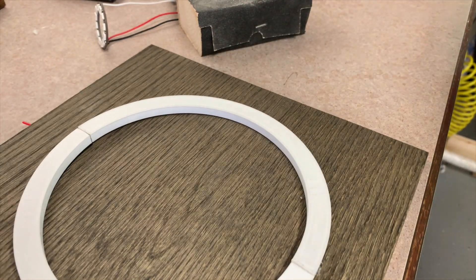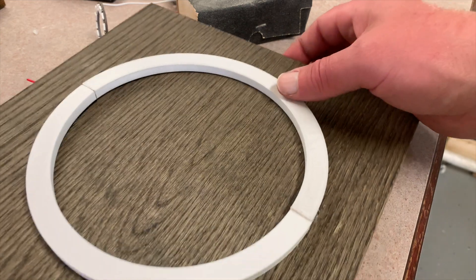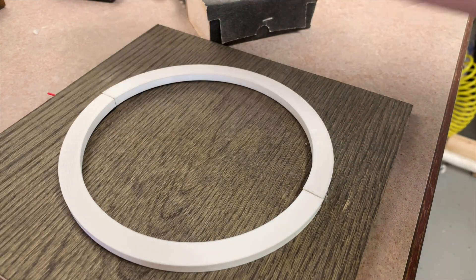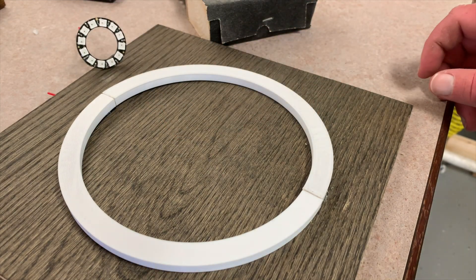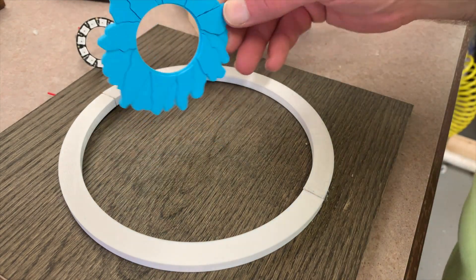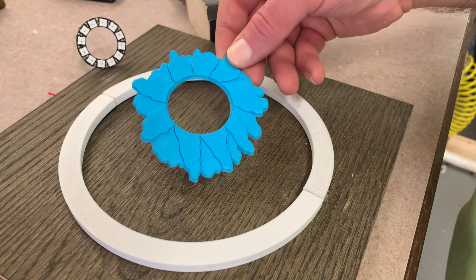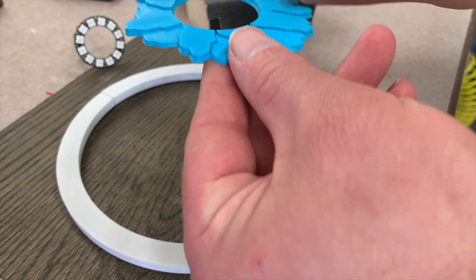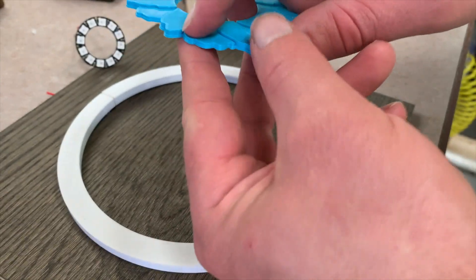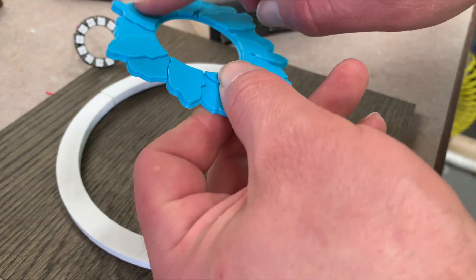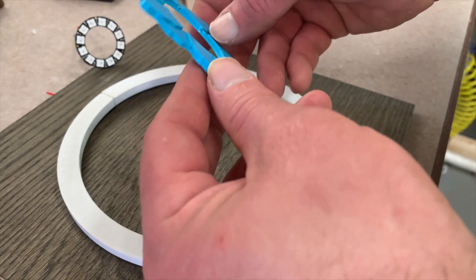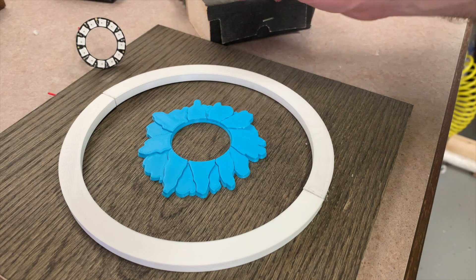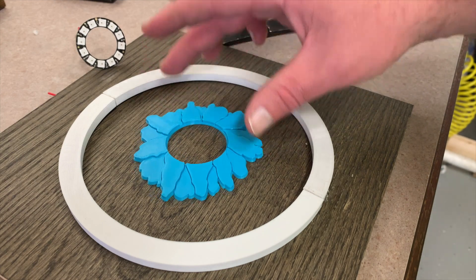For now I'm going to grab my 3D printed flower for the middle and then figure out these holes for this. So this is the 3D printed flower that she drew. Got different heights. Base is one millimeter, back petals are two, and the tall ones are three. I'm not sure which way is up again, but I think it was something like this.